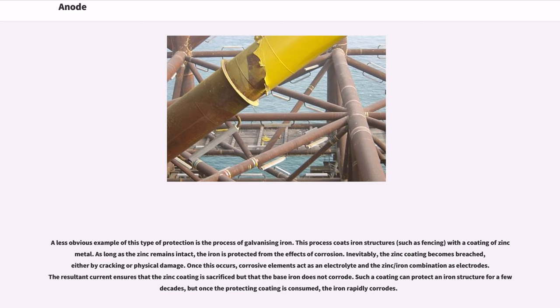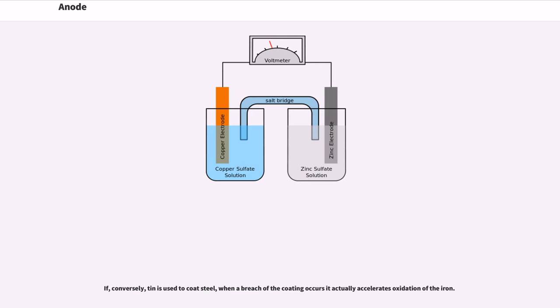Once this occurs, corrosive elements act as an electrolyte and the zinc/iron combination as electrodes. The resultant current ensures that the zinc coating is sacrificed but that the base iron does not corrode. Such a coating can protect an iron structure for a few decades, but once the protecting coating is consumed, the iron rapidly corrodes. If, conversely, tin is used to coat steel, when a breach of the coating occurs it actually accelerates oxidation of the iron.